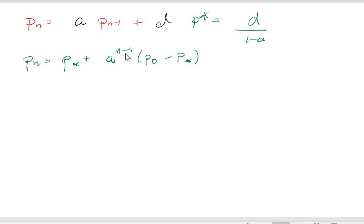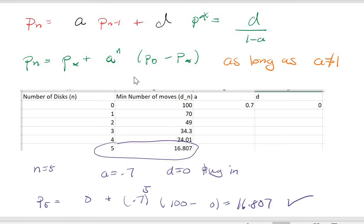That should be N, not N minus 1. So this is the formula, as long as A is not equal to 1. And this is in your book. So if you look up analytical solution in the PDF, you'll get to this. So how does it work?